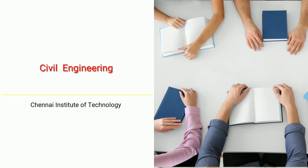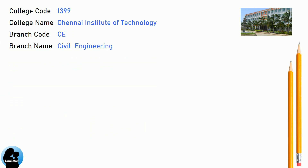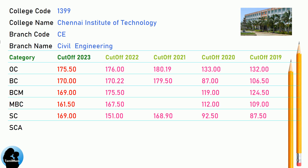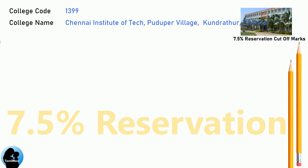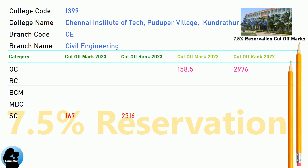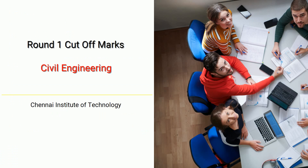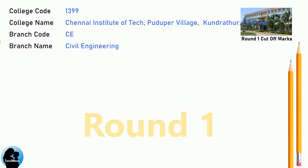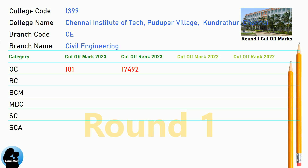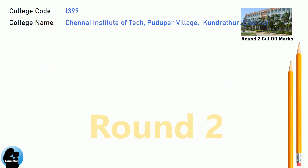DNA Cut-off for Chennai Institute of Technology in Civil Engineering. DNA 7.5 Reservation Cut-off for Chennai Institute of Technology in Civil Engineering. DNA Round 1 Cut-off for Chennai Institute of Technology in Civil Engineering. DNA Round 2 Cut-off for Chennai Institute of Technology in Civil Engineering.